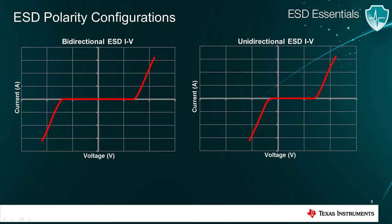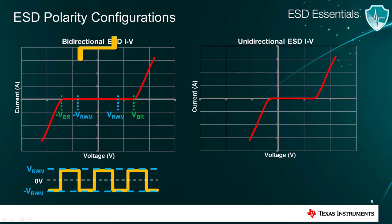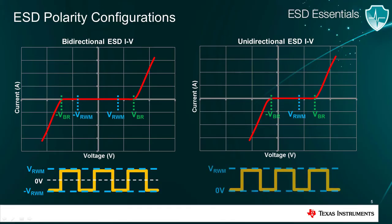ESD diodes typically come in two polarity configurations: bidirectional and unidirectional. Bidirectional diodes usually have a symmetric IV curve with symmetric working and breakdown voltages. Because of this, bidirectional diodes can support signals with a negative and positive range, granted it falls between negative VRWM and positive VRWM. On the other hand, unidirectional diodes are not symmetric and break down for almost any negative voltage. As a result, unidirectional diodes only support positive voltage signals between 0 and VRWM.